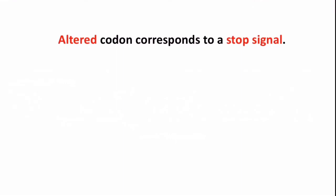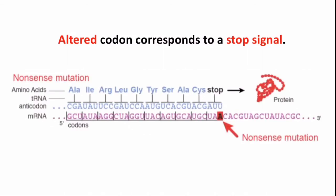And in another case, altered codon corresponds to a stop signal. That means a stop codon. So at certain point, if the sequence is altered and the sequence resembles a stop codon, further synthesis of the protein will not be occurring. This is known as nonsense mutation.